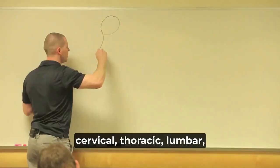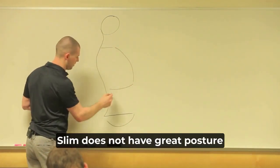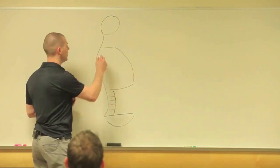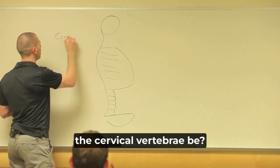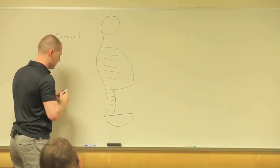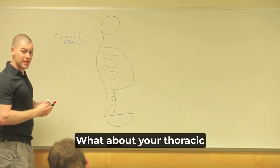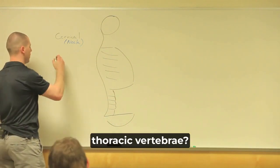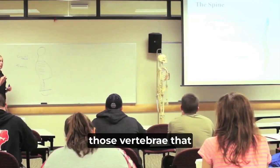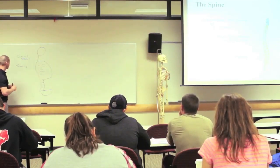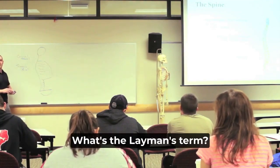Let me draw a little picture of 'slim' here — head, cervical, thoracic, lumbar, pelvis, ribcage. Slim does not have great posture in this picture. So cervical — what are the cervical vertebrae in layman's terms? These are your neck vertebrae. What's special about your thoracic vertebrae? The rib cage — so your thoracic vertebrae are those vertebrae that connect to a rib. And lumbar? Yeah, lumbar — low back.